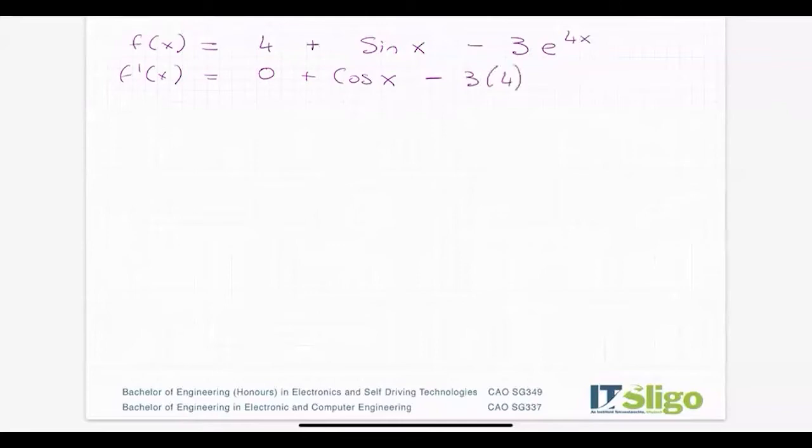Tidying that up: f'(x) = cos(x) - 12e^(4x).